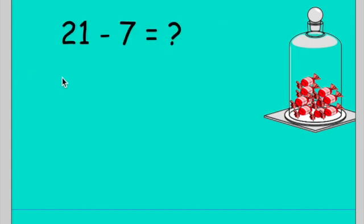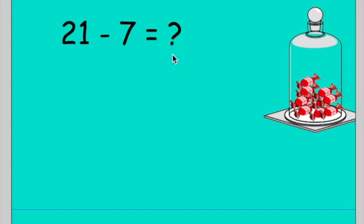In front of you, we've got a number sentence. The number sentence is made up of three parts: the number at the beginning, the number that is being subtracted — so that's the total amount at the beginning — this is the amount that's being taken away, and this is the amount that's left at the end. This is basically a missing number sentence because the missing number is at the end.